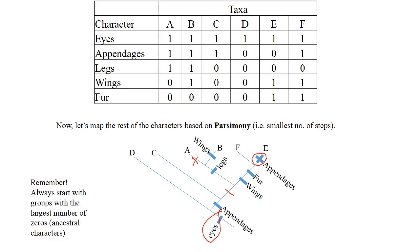We need to remember that we need to always start with the groups with the largest number of zeros or ancestral characters for building a cladogram. I hope you have enjoyed watching this video.